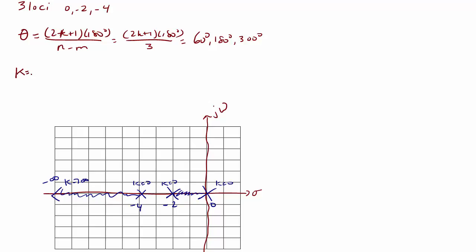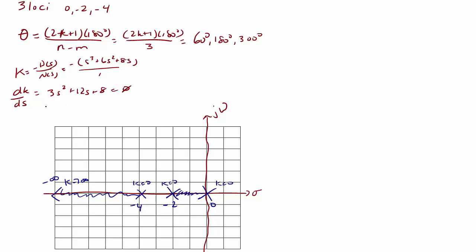Now let's find the centroid of our asymptotes. Recall that k is equal to negative d(s) over n(s), which is negative the quantity s cubed plus 6s squared plus 8s over 1. The derivative of k with respect to s is equal to 3s squared plus 12s plus 8. Setting that equal to 0 and solving for the roots gives s1 and s2 at negative 0.845 and negative 3.155. We notice that negative 3.155 is not on a real axis segment.